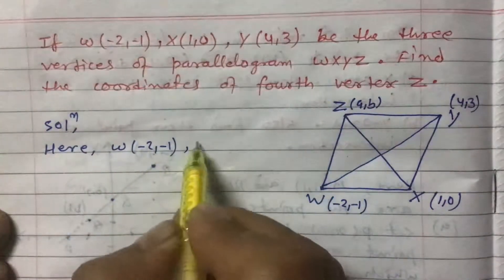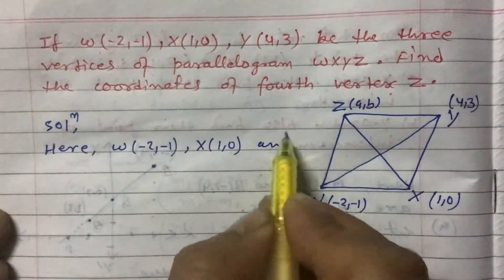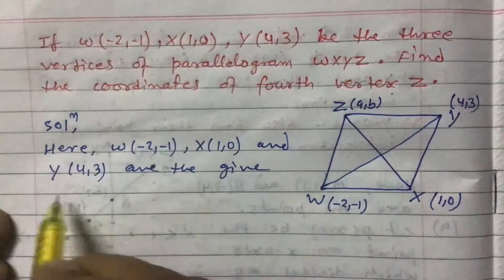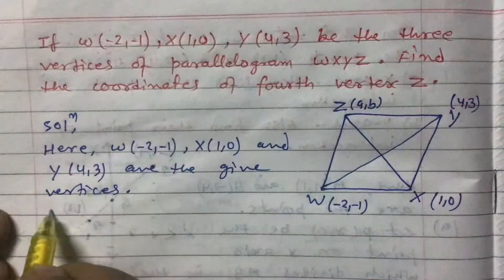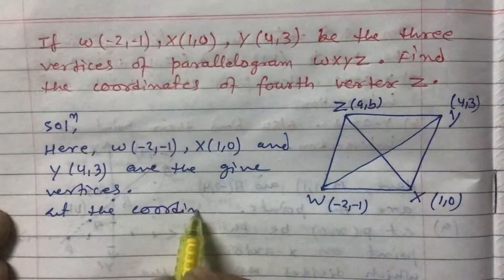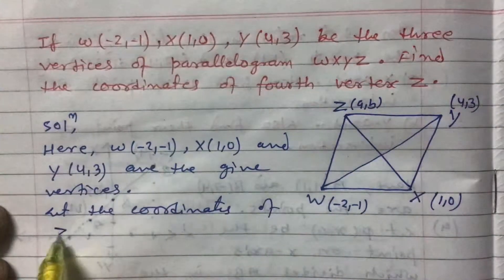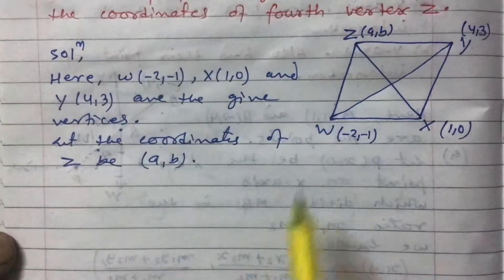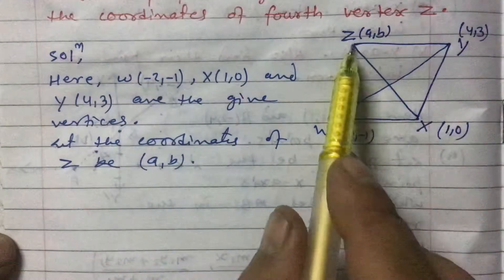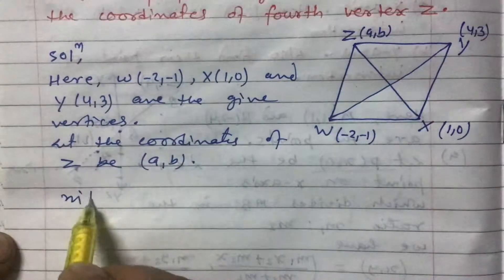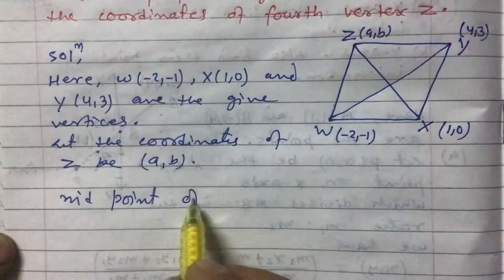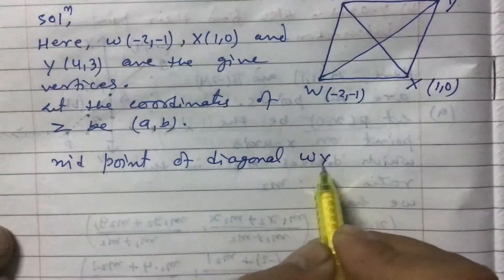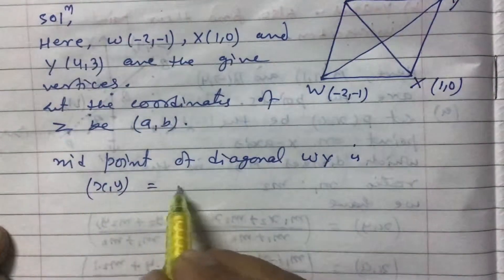So in the solution: W(-2, -1), X(1, 0), and Y(4, 3) are the given vertices. Let the coordinates of Z be (a, b). Now we can find the midpoint of diagonal WY and the midpoint of diagonal ZX.